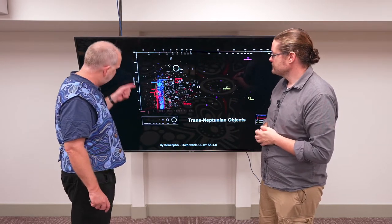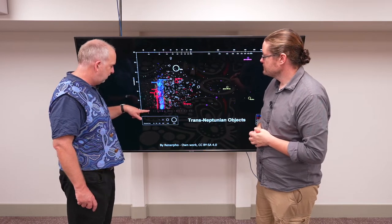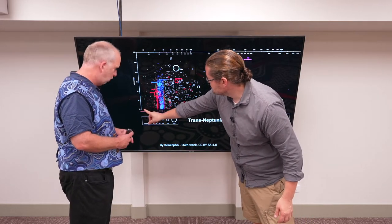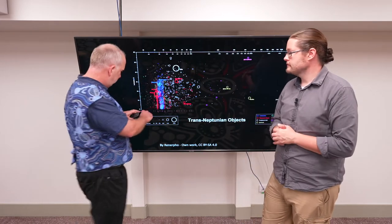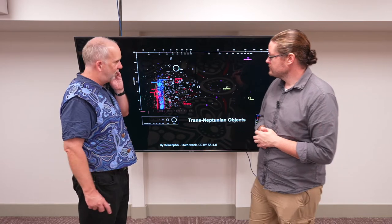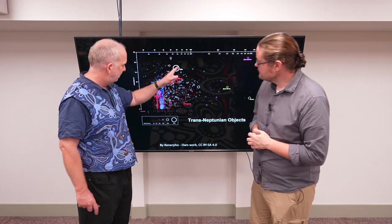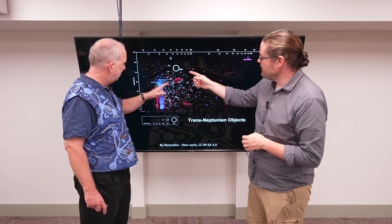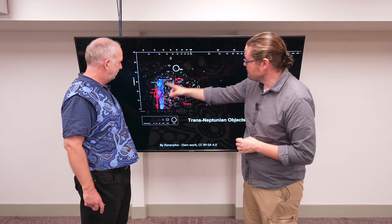Up here we're plotting the inclination. Some of the inclination is zero, so essentially Neptune is like here. Something that goes around the same place as all the planets is going to be down here. And here you can see all the different trans-Neptunian objects. There's Pluto, there's Eris, Haumea, Makemake, Gonggong. So there's a bunch of them.